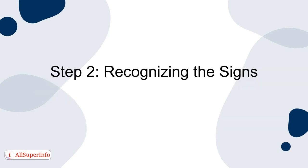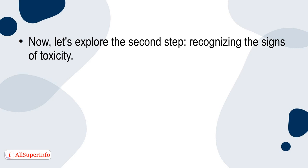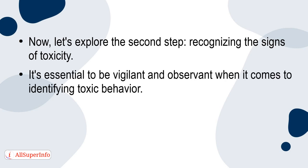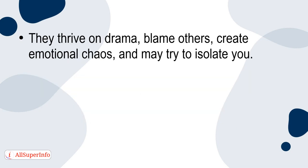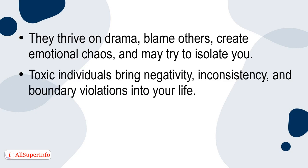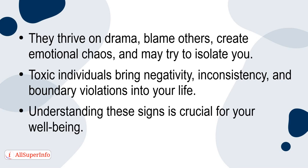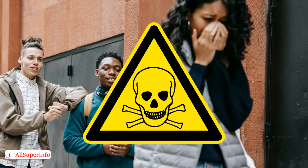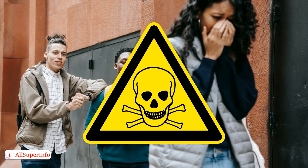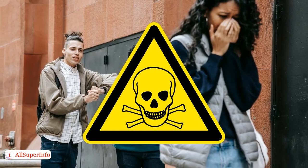Step 2: Recognizing the signs. It's essential to be vigilant and observant when identifying toxic behavior. Toxic people exhibit behaviors like constant criticism, manipulation, and a lack of empathy. They thrive on drama, blame others, create emotional chaos, and may try to isolate you. Toxic individuals bring negativity, inconsistency, and boundary violations into your life. By spotting these signs early, you can take steps to address toxic behavior and create a more positive, nurturing environment for yourself.